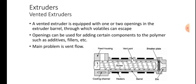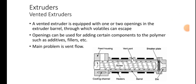Vented extruders are equipped with one or two openings in the extruder barrel through which volatiles can escape. These openings can also be used for adding certain components to the polymer, such as additives and fillers. The main problem associated with vented extruders is vent flow.